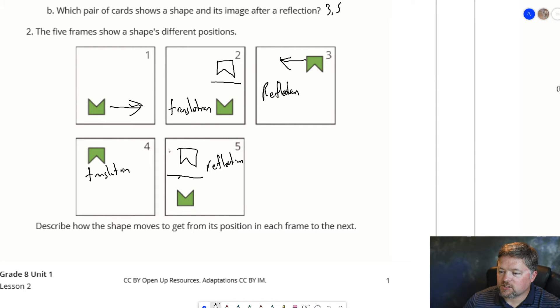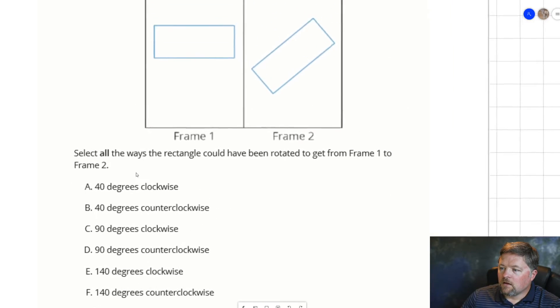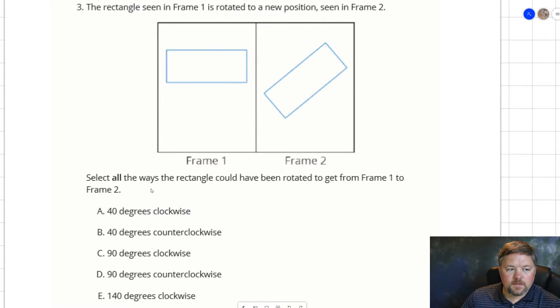So, 1 to 2 was a translation. 2 to 3 was a reflection. 3 to 4 was a translation. And 4 to 5 was a reflection.